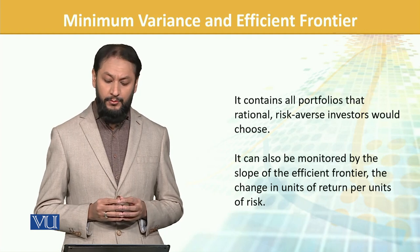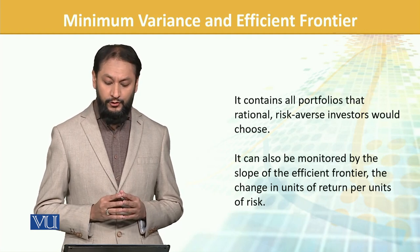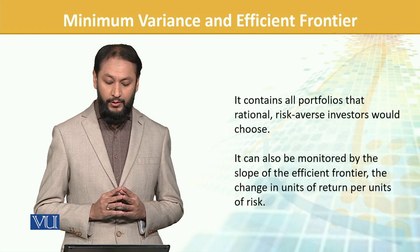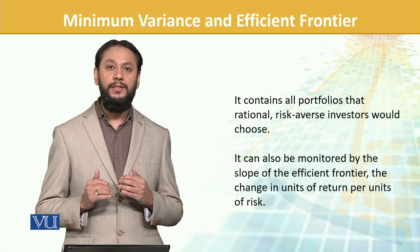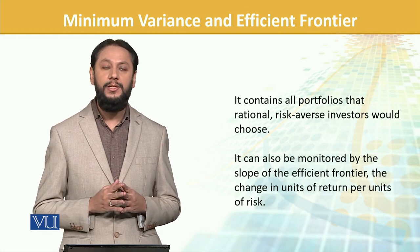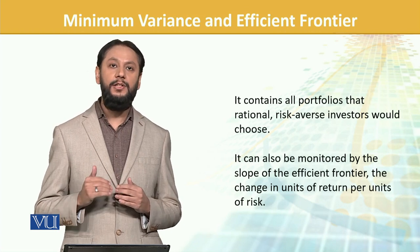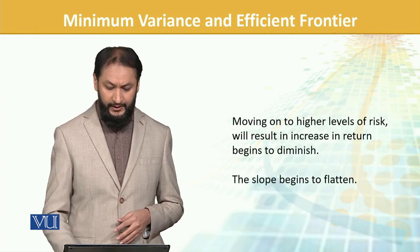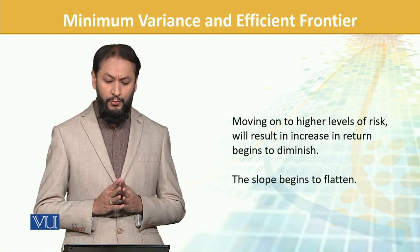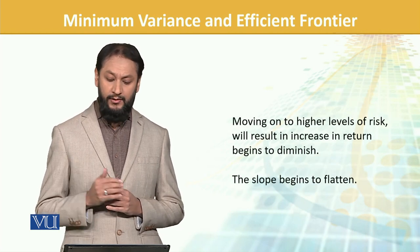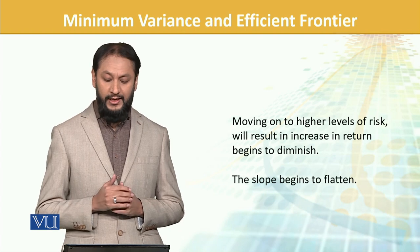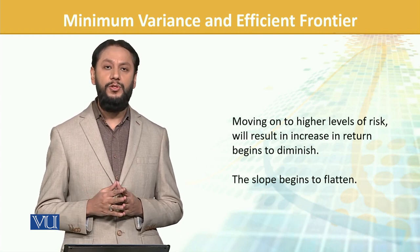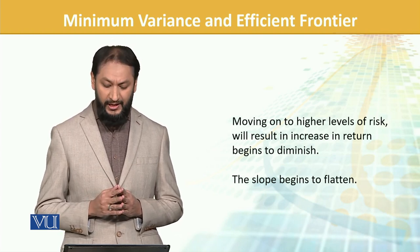The efficient frontier can also be assessed by the slope — the change in return per unit of risk taken. Moving to a higher level of risk will result in increases in return that begin to diminish.